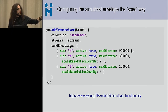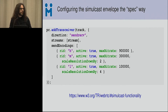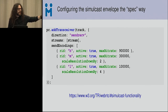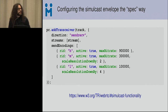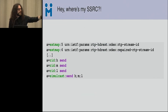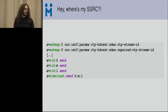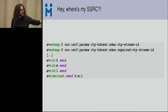The proper spec-compliant way is to configure the simulcast envelope when you call addTransceiver, and those are the layers you're stuck with for the whole call — you can enable or disable them but you can't change the envelope itself. The syntax is very similar to what we saw for Firefox, but a key difference in the SDP is that Chrome also signals a repaired RIDs extension to differentiate between the stream and its retransmission channel. Crucially, there are no SSRCs in Chrome's SDP output, and the simulcast line format also differs slightly.